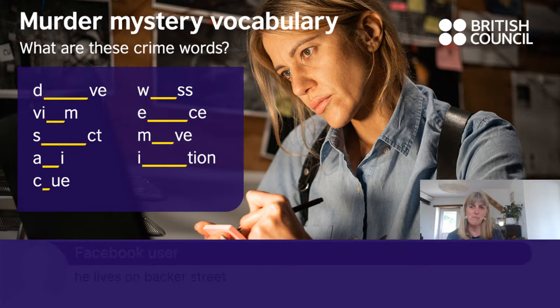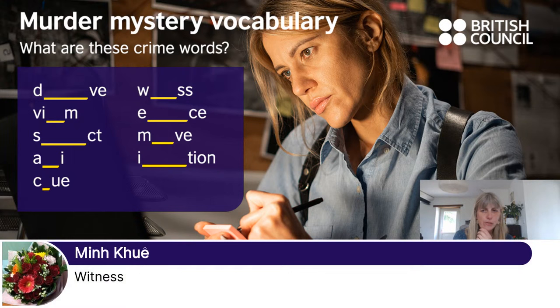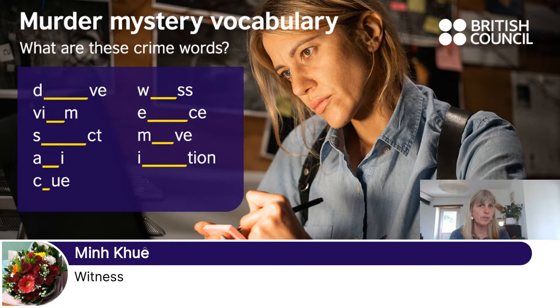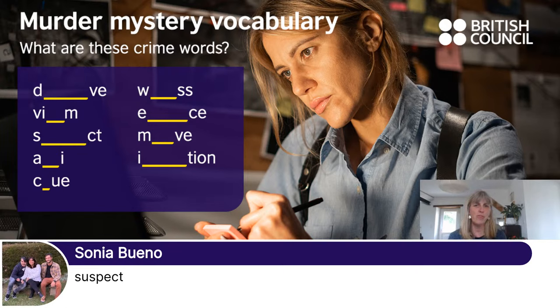Somebody has just said he lives on Baker Street — yes, Sherlock Holmes. That was his very famous address: 221B Baker Street, a famous address in London. Back to the words: witness — yes, that's the person who saw the crime happening. Alibi — yes, excellent Maria. So the alibi is like proof that a person can't have committed a crime because they were in a different place or with somebody else when it happened. That's a good crime word. A suspect — yes, that's one of the people who we think could have committed the crime.